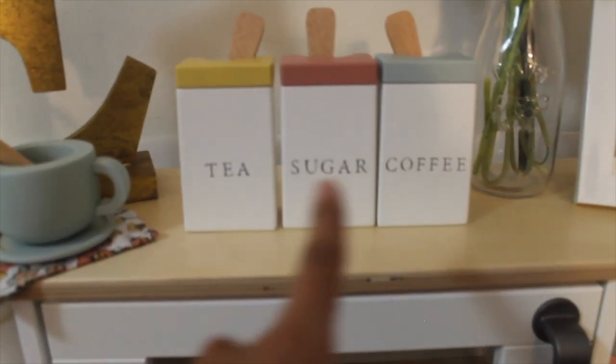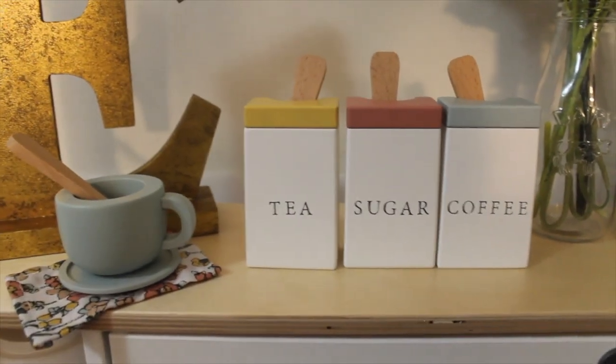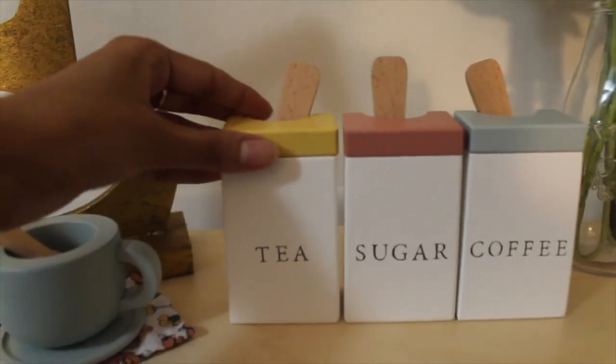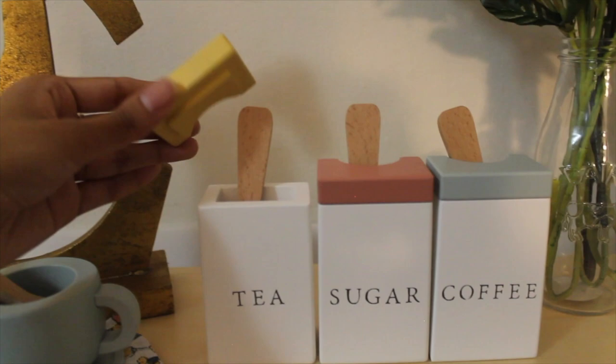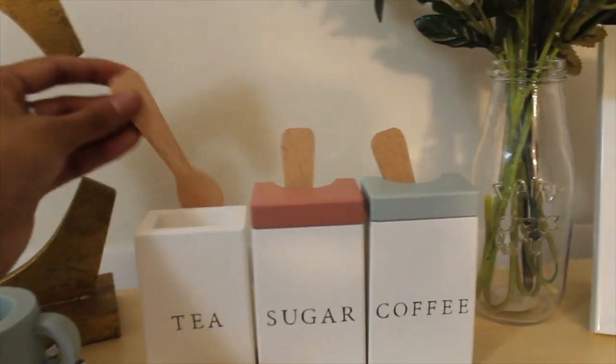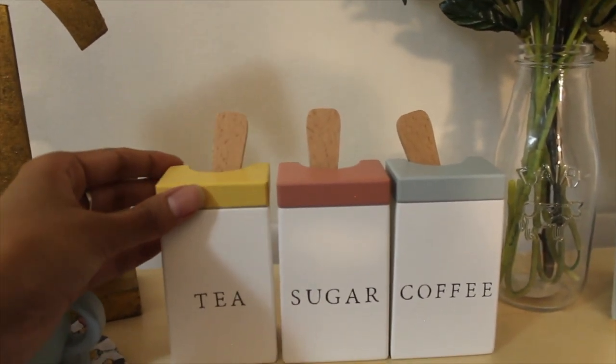This is just a really cute wooden tea set I got this from Target. It's from the brand Hearth and Hand by Magnolia, which is my favorite brand. I just love their stuff. So they have a tea, sugar, and coffee container along with some wooden spoons.